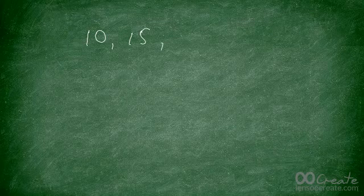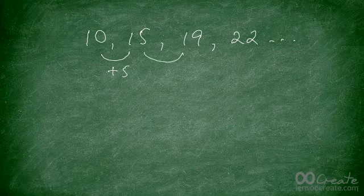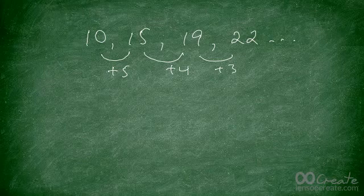Let's run through another series. Say you have 10, 15, 19, 22. This is not an arithmetic progression because the difference here was 5, but then only 4, and then 3. So this is not an arithmetic progression — it is a certain kind of series, but not an AP. We're going to focus only on arithmetic progressions in this video.